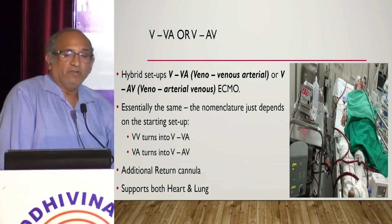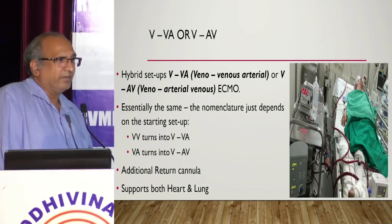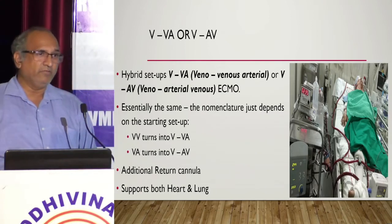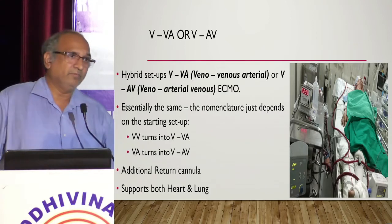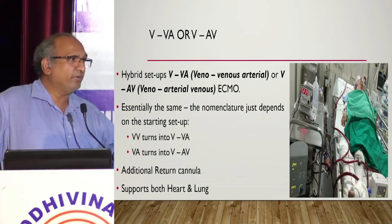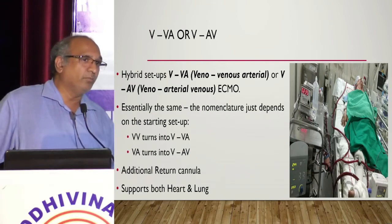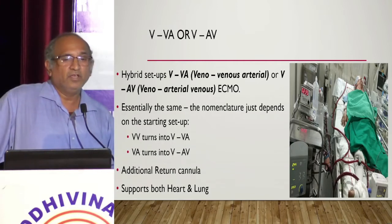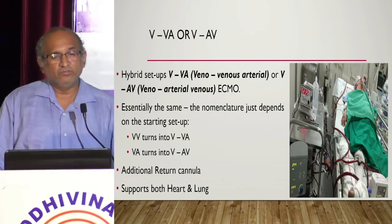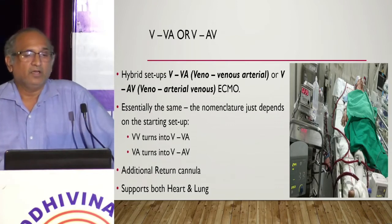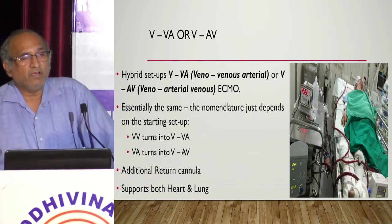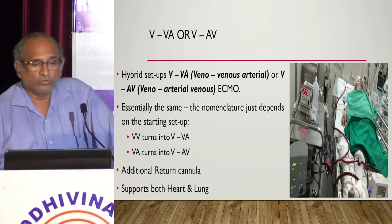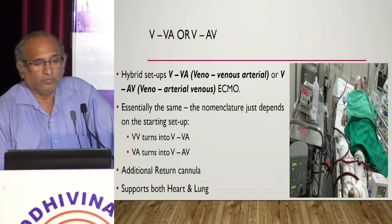The difference between VA-V and VV-A is just a nomenclature difference. When you convert VV ECMO, it becomes VV-A — the first two letters tell you what the original mode was, and the last letter tells you what it has been converted into. VV-A means it was originally VV (venous) and was switched over to VA. VA-V means it was originally cardiac ECMO (VA) and switched over to VA-V ECMO.